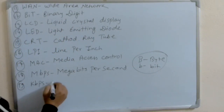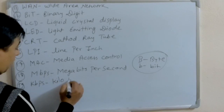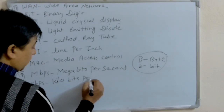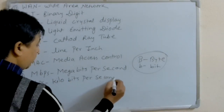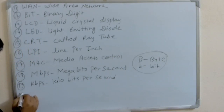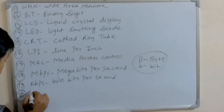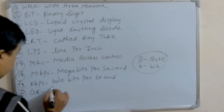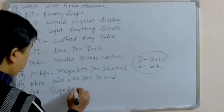KBPS: Kilobits Per Second. GB: Gigabyte.